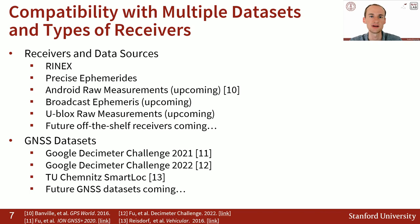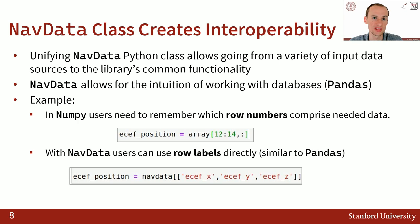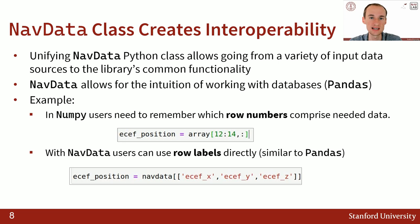Going into more detail: we already have compatibility with numerous types of datasets as well as other GNSS data sources, and in the near future, compatibility with additional types of receivers and GNSS datasets. This special ingredient is going from that wide variety of inputs, all parsed into this custom NavData Python class. The special thing about NavData is that it allows you the intuition of working with a labeled database, but the underlying data structure is implemented using NumPy, allowing you to make use of the speed of vectorized operations.